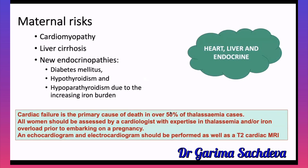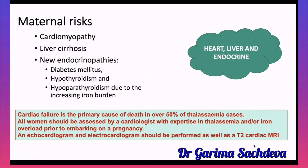Regarding maternal risks, beta thalassemia affects the heart, liver, and endocrine system. It causes cardiomyopathy, liver cirrhosis, and endocrinopathy including diabetes, hypothyroidism, and hypoparathyroidism due to iron overload. The primary cause of death in thalassemia is cardiac failure, seen in over 50% of cases. All women should be assessed by a cardiologist with expertise in thalassemia prior to pregnancy, with echocardiogram, ECG, and T2-weighted cardiac MRI.